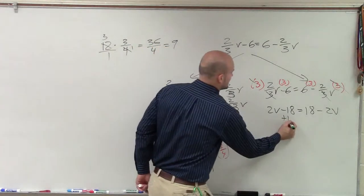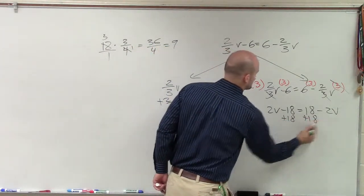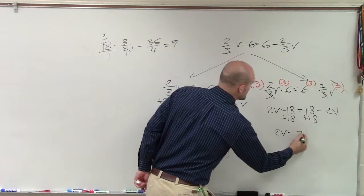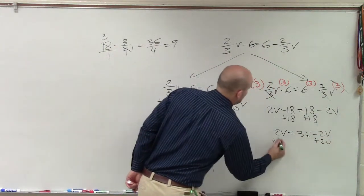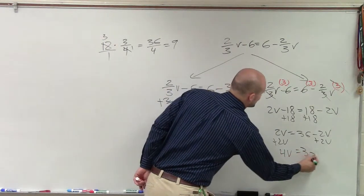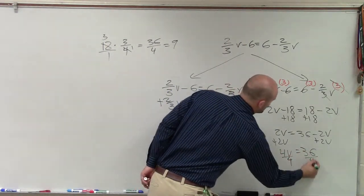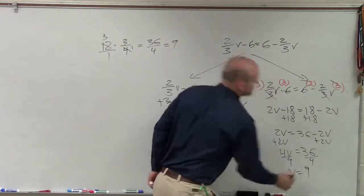So now, I just add the 18 to both sides. So I have 2v equals 36 minus 2v, add the 2v, add the 2v, 4v equals 36, divide by 4, divide by 4, v equals 9.